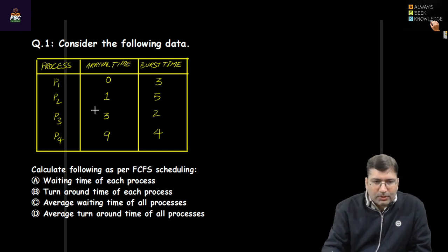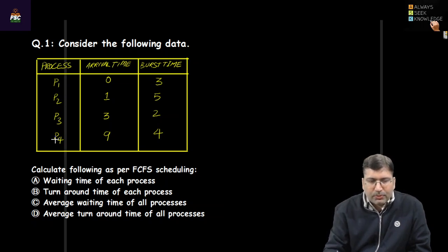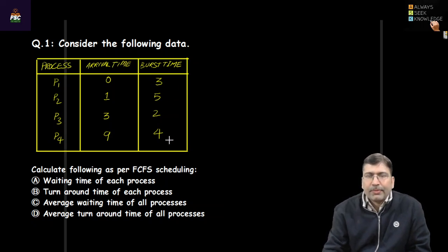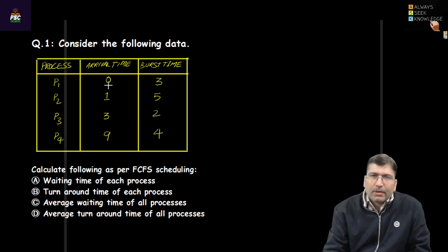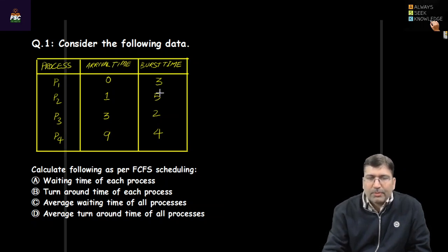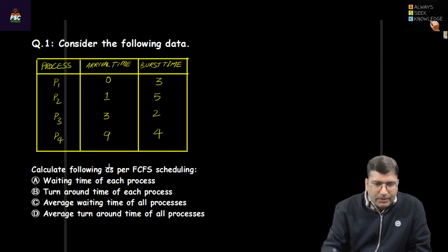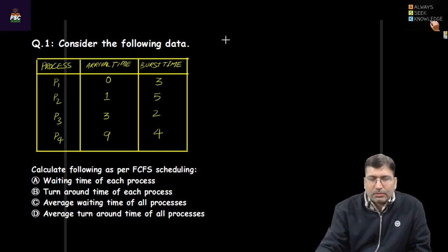The problem is given like this: there are four processes — P1, P2, P3, and P4 — with their arrival times and burst times given. The arrival time is when a process arrives in the ready queue, and the burst time is the required CPU cycle. When we try to solve a scheduling problem, we draw a Gantt chart.